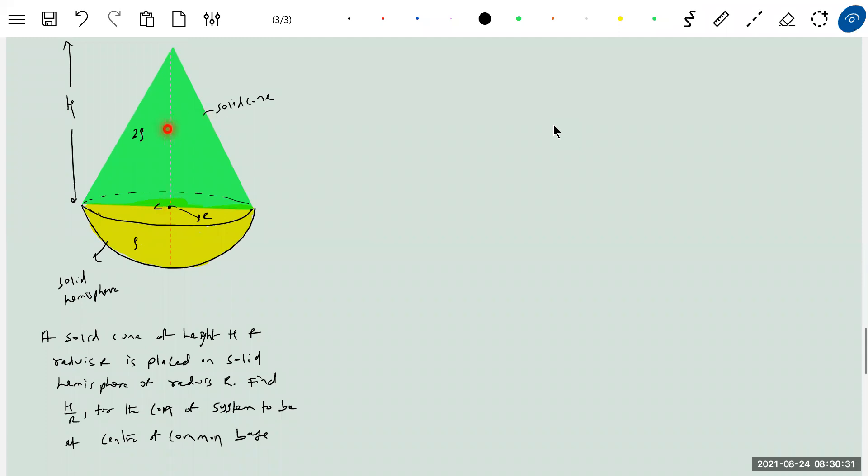For solid cone we know it will be somewhere here, and the hemisphere will be here. Now for together, what will happen? The center of mass of the system should be somewhere here. So how H and R are related, that is what we are trying to find out here.